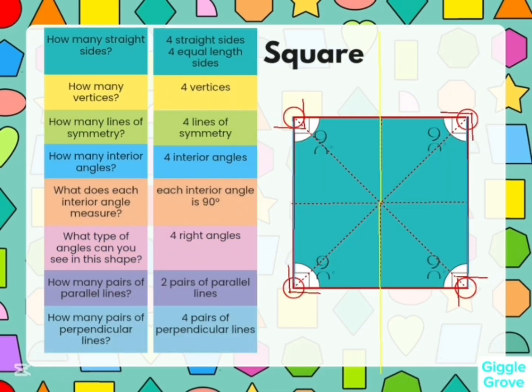Let's talk about the square. There are four straight sides, four equivalent sides, four vertices, and four lines of symmetry. There are four interior angles — each interior angle is 90 degrees — four right angles, and two pairs of parallel lines.